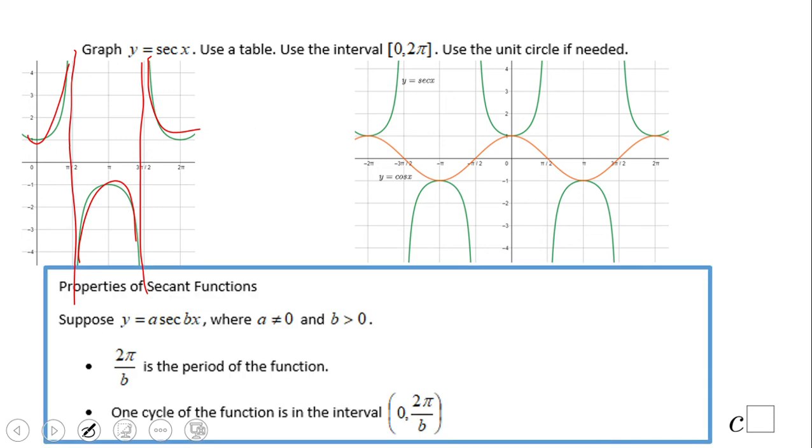Let's say we have secant of 4πx. As I said, instead of graphing secant of 4πx, we're going to graph y equals cosine of 4πx. Then here the first thing I'm going to do is find the period which is 2π over b, b being 4π in this case.